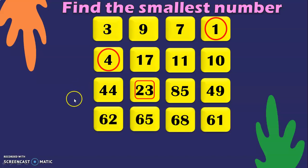Here again we are given four two-digit numbers: 62, 65, 68, and 61. In all four numbers we have 6 in the tens place. Now apply the third rule: when two-digit numbers have the same digit in the tens place, move on to compare the ones digit. In the ones place we have 2, 5, 8, and 1. Among these, 1 is the smallest, so we can decide that 61 is the smallest number in this series.